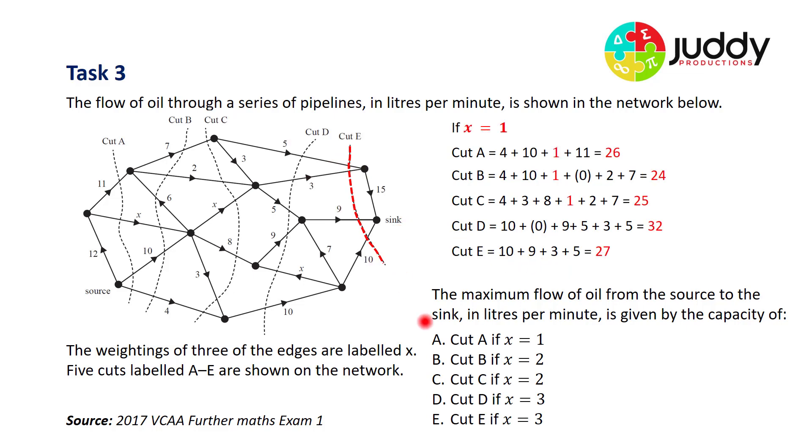Our first consideration was option A, that cut A would represent the maximum flow and therefore the minimum capacity if X is equal to 1. So let's substitute X equals 1. Cut A ends up with a capacity of 26, cut B 24, cut C 25, cut D 32 and cut E 27. So if X is 1, cut B has the minimum capacity and hence the maximum flow. So option A is incorrect.